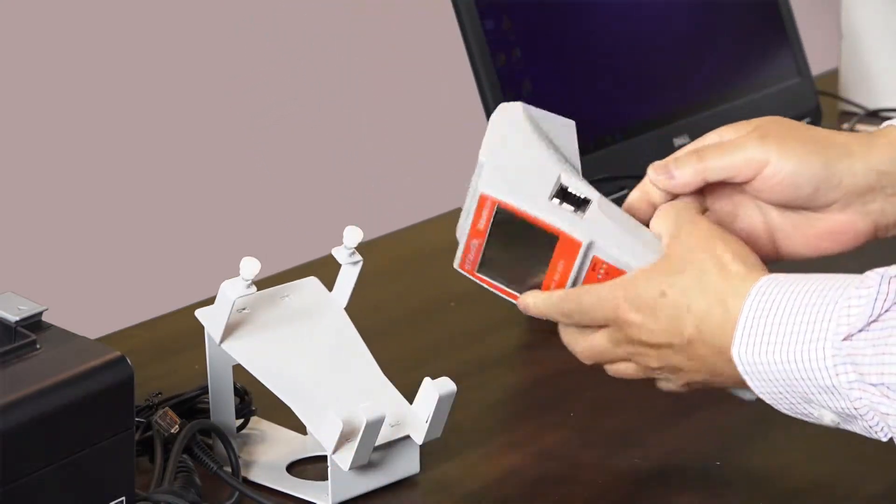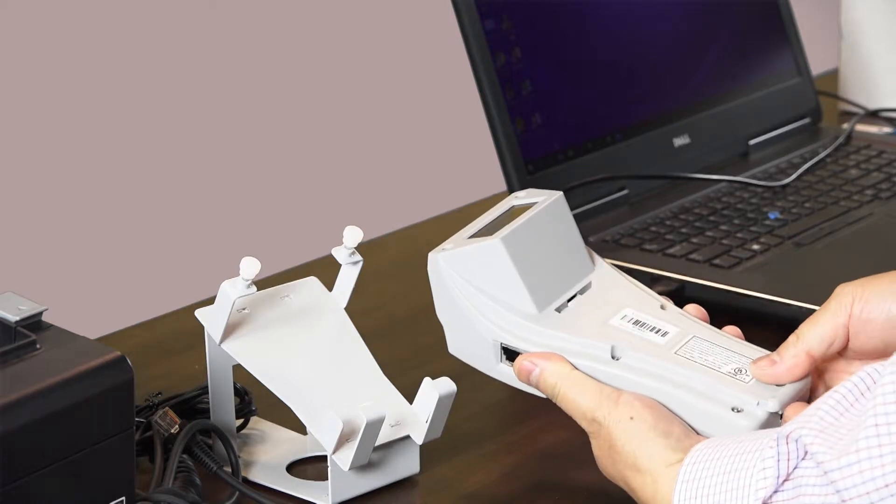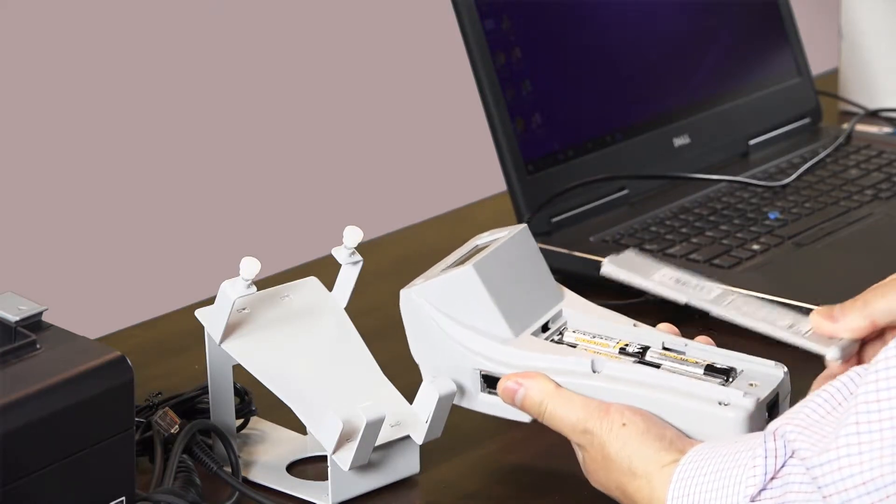If you would like to operate the Examiner Elite Verifier on battery power, there is a battery compartment on the back side of the verifier where you can install four double-A batteries into the unit.